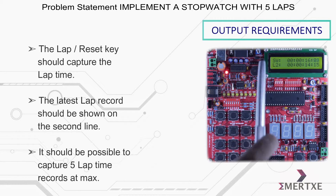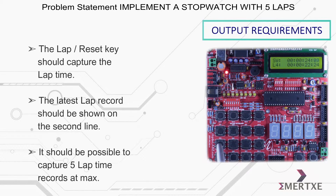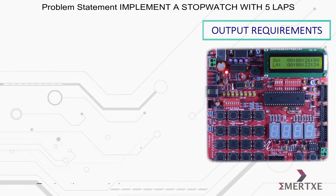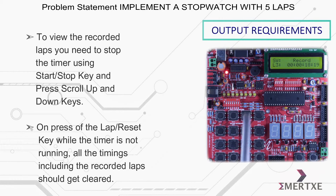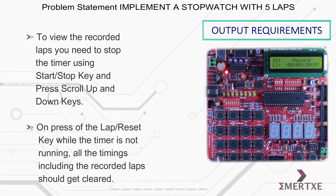It should be possible to capture 5 lap time records at max. To view the recorded laps, you need to stop the timer using the start or stop key and press the scroll up and down keys. On pressing the lap or reset key while the timer is not running, all the timings including the recorded laps should get cleared.